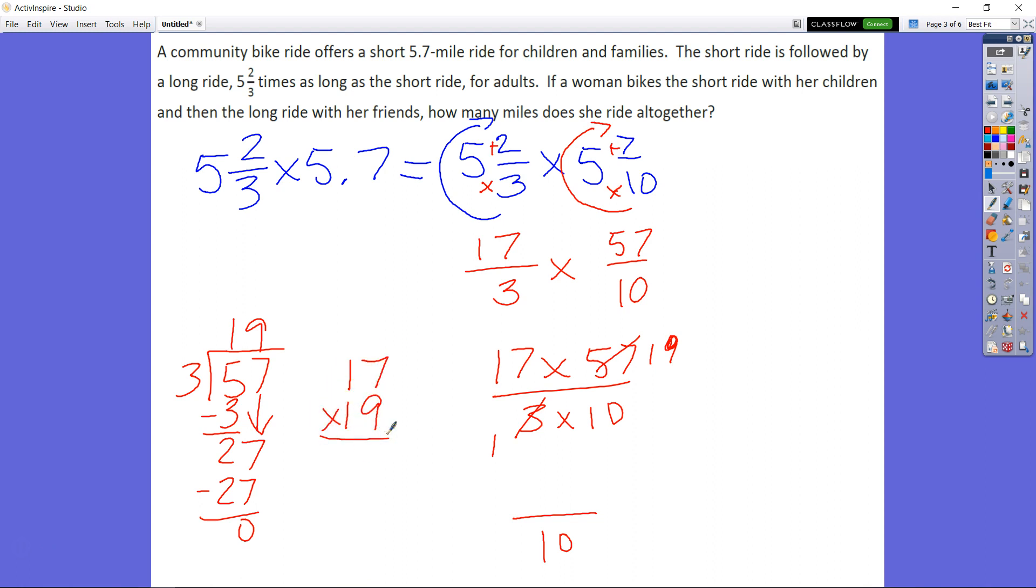7 times 9 is 63, 9 times 1 is 9 plus 6 is 15. Working through the multiplication gives me 323 tenths, which is equal to 32 and 3 tenths of a mile.